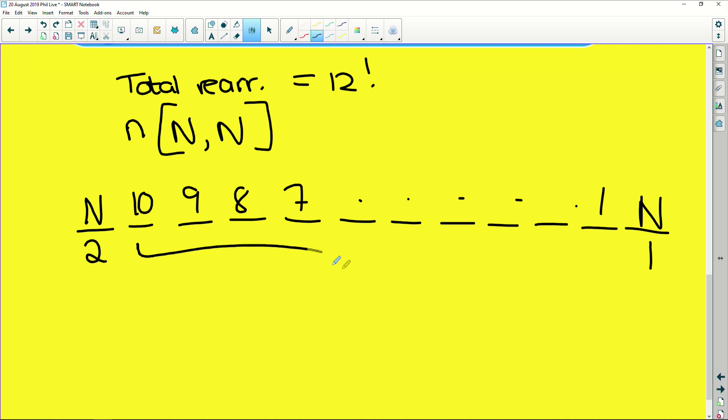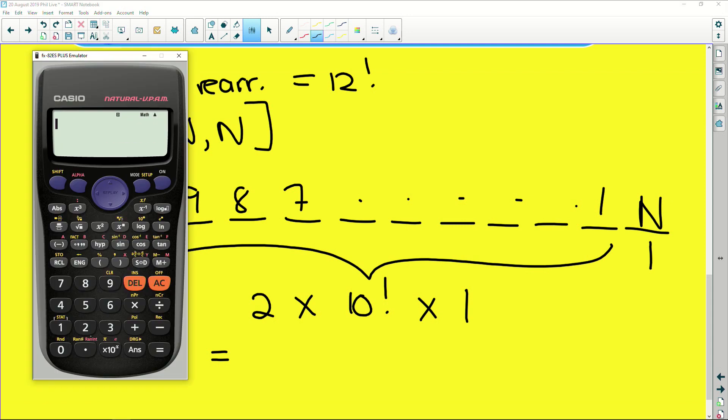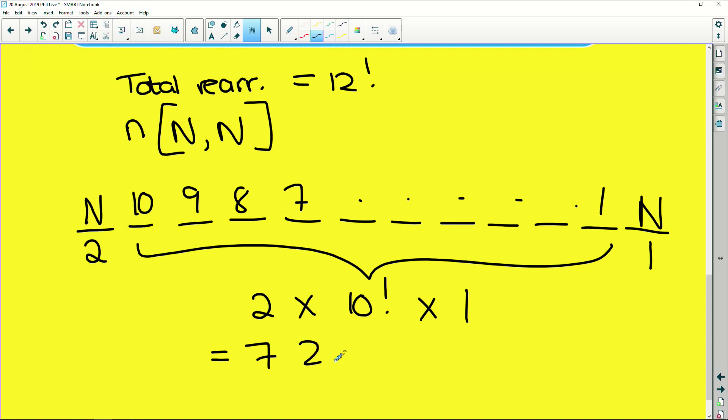So this is all represented by 10 factorial. Remember that. Then we have the two here. So two multiplied by 10 factorial, multiplied by the one option there. And that is going to give us 2 multiplied by 10, shift factorial, and that is 7,257,600. So that's the total for starting and beginning with N.